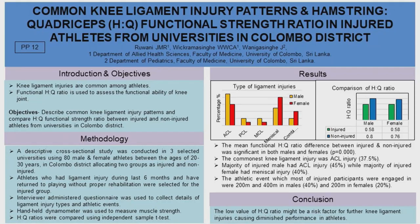The commonest knee ligament injury among athletes was ACL injury at 37.5%. In gender-wise analysis, the male group predominantly had ACL injury while the female group had meniscal injury. The commonest event in which injured athletes were engaged was short distance running: 200 meters and 400 meters for males, and 200 meters for females.